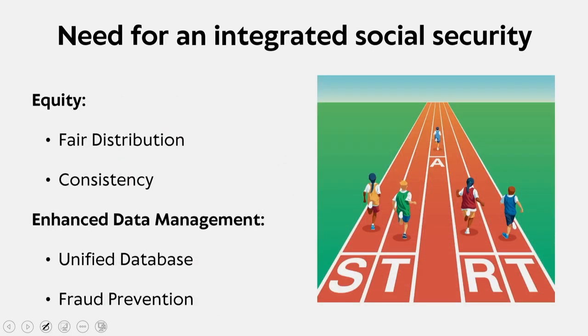When we look into equity, it happens to be one of the biggest concerns. For that, we need an integrated system, and the dimension capable of that would be fair distribution. Fair distribution ensures a more equitable distribution of resources targeting those who are most in need. When looking into consistency, there should be standardized benefits and services reducing disparities between different programs and regions. Consistency also caters to equity.